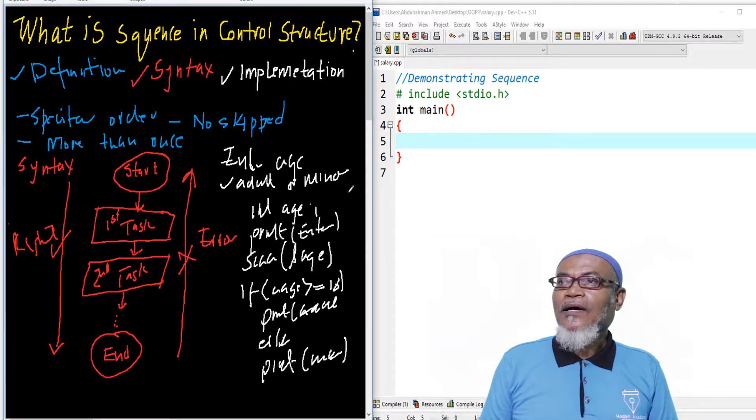So this particular order from here to down here, it is the correct order. However, if we take up a different order, this will be a wrong order. Let's take, for example, if you take this particular block, put it up, it will give an error.